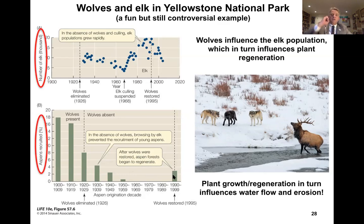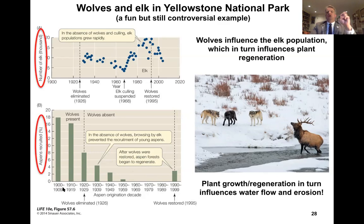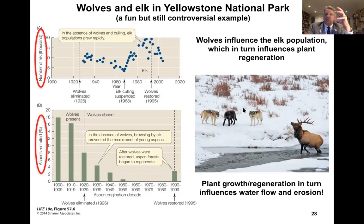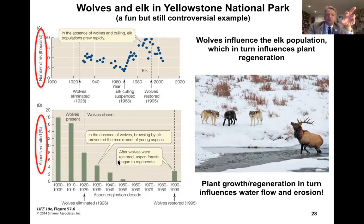Wolves are influencing the elk population, which in turn is influencing plant regeneration. The effect goes far beyond just aspen recruitment, because plant growth and regeneration influences the actual dynamics of riverine habitats, influencing water flow and erosion as well.